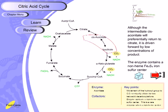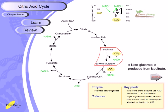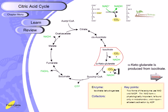The third step of the citric acid cycle is the conversion of isocitrate into alpha-ketoglutarate. This is the reaction where the first carbon dioxide is generated: the carboxyl group at the third carbon position leaves as CO2 and reduces NAD+ into NADH. The enzyme isocitrate dehydrogenase is found only in mitochondria and requires allosteric activation by ADP; if ATP is present it will block this reaction.